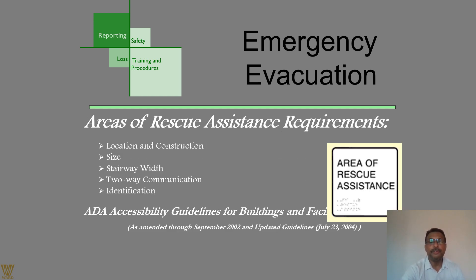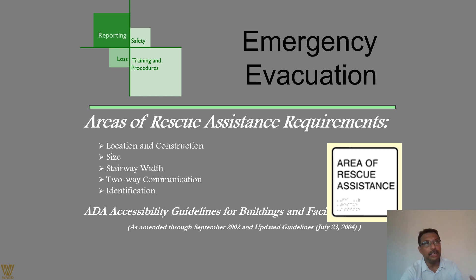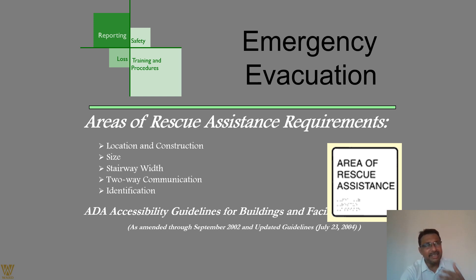The requirements for rescue assistance areas include: location, size constraints, stairway width, two-way communication availability, and identification. Consider: is the size large enough for the number of people? Is the location accessible by everyone, including the physically disabled and vision-impaired? Is two-way communication available in that area? Accessibility guidelines for buildings and facilities must be maintained at all times.